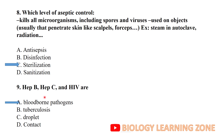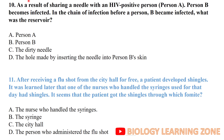Hepatitis B, Hepatitis C, and HIV are blood-borne pathogens. As a result of sharing a needle with an HIV-positive person, Person B becomes infected. In the chain of infection, before Person B becomes infected, what was the reservoir? Person A.